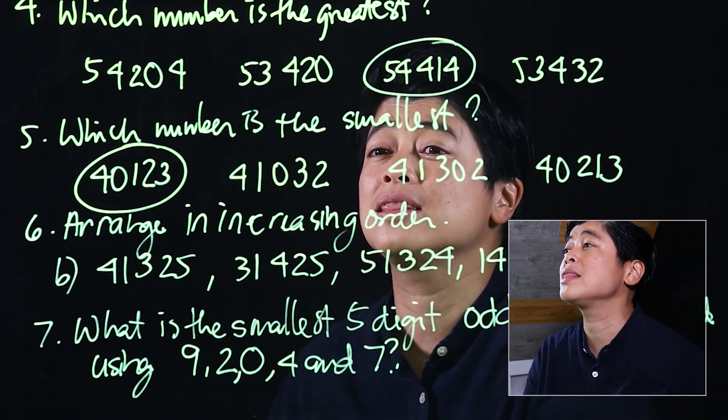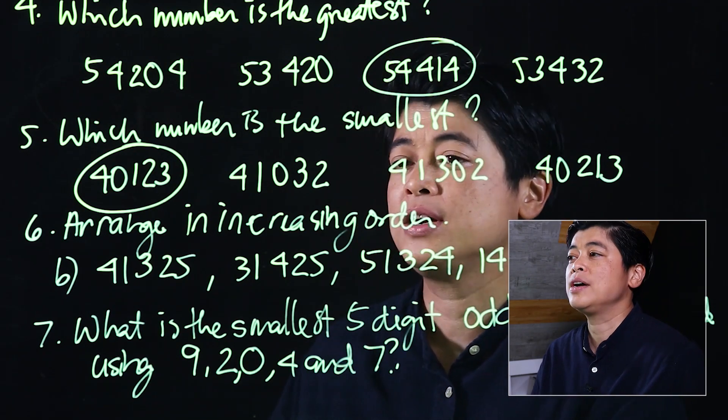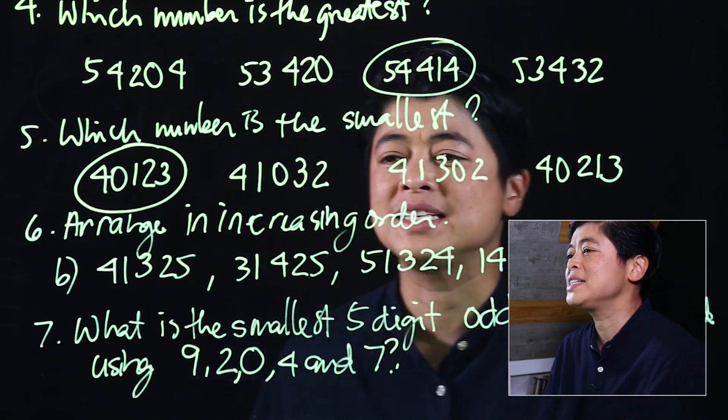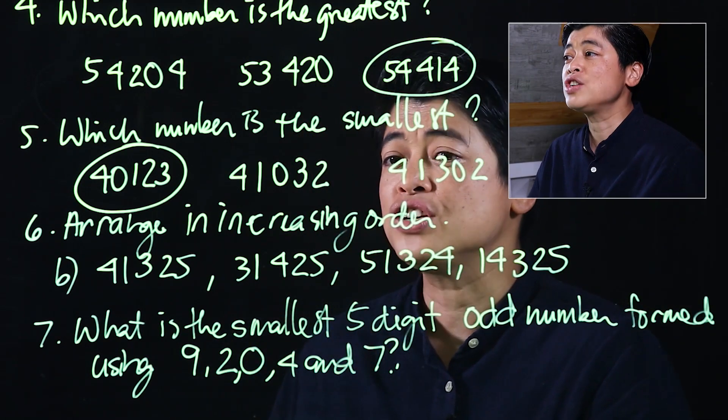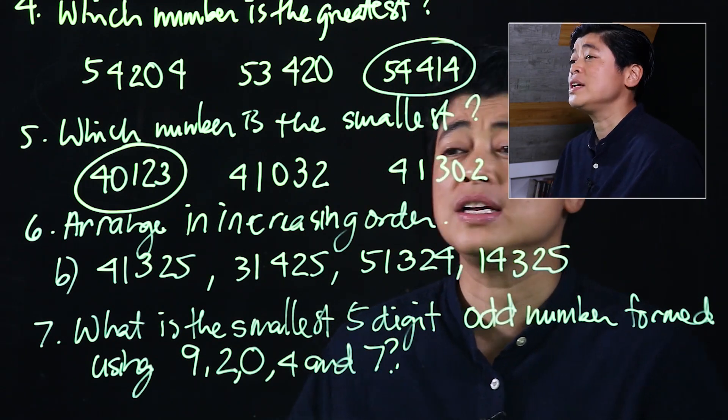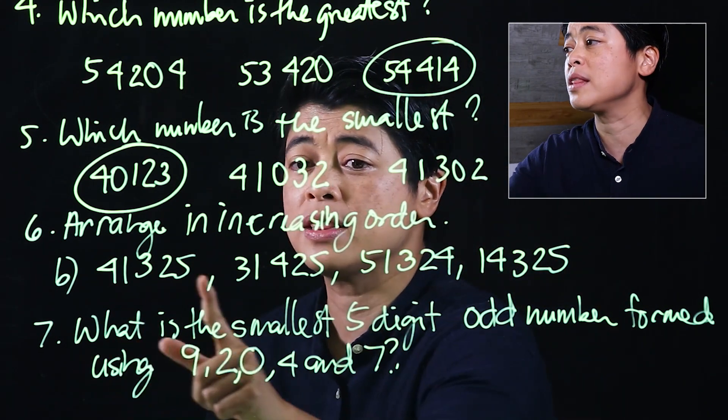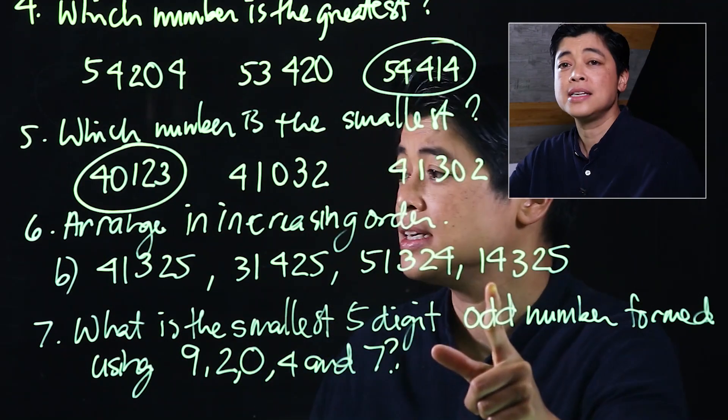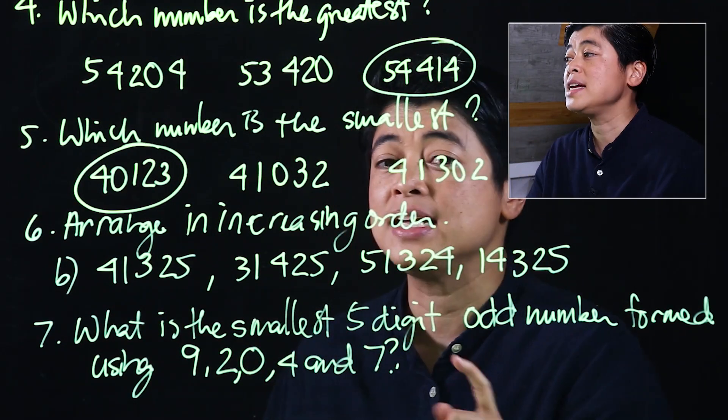The next problem says 'arrange in increasing order.' If we want to arrange in increasing order, we start with the ten thousands place. The smallest is 14,325.